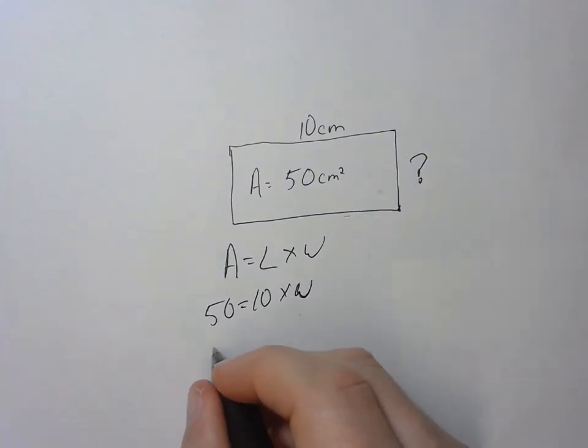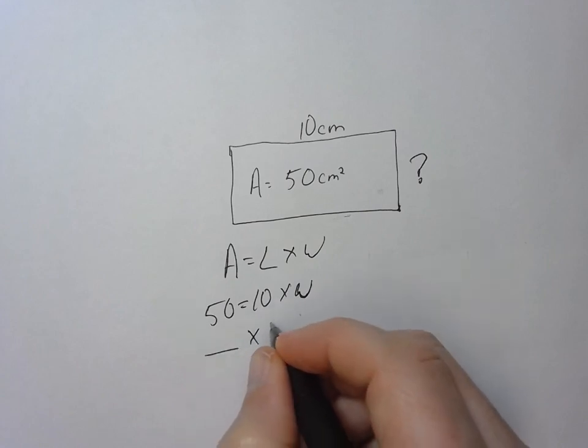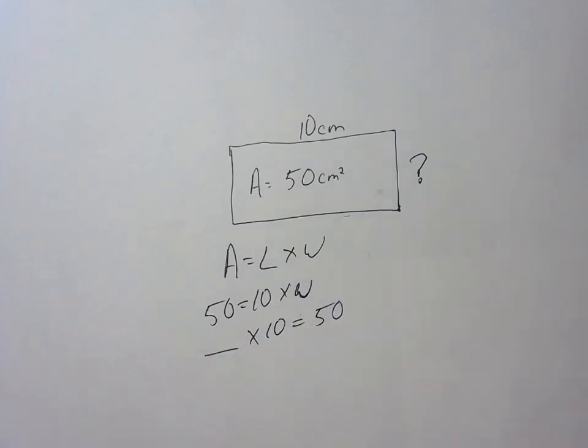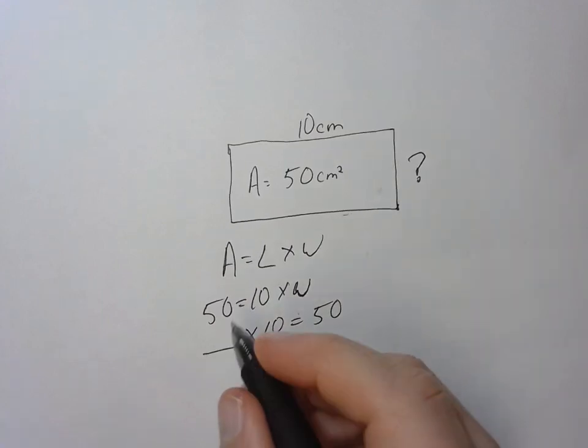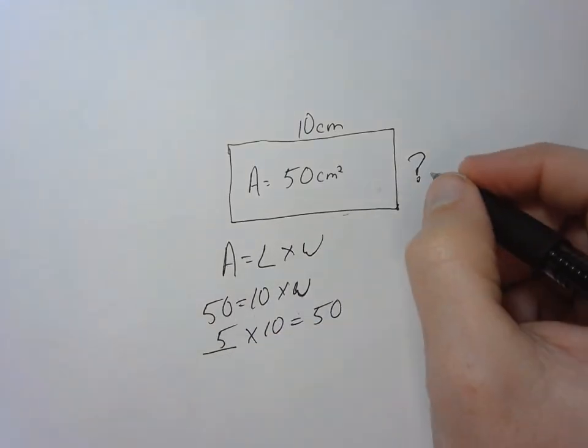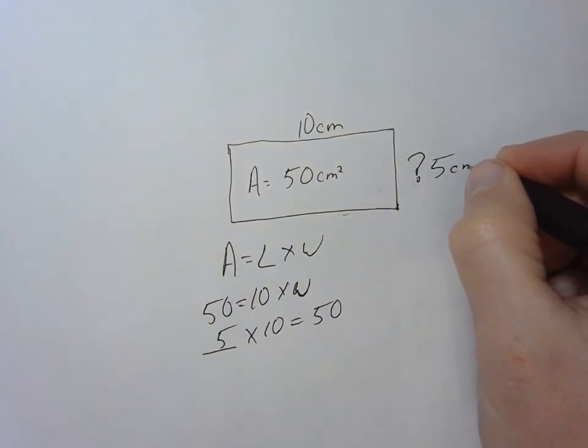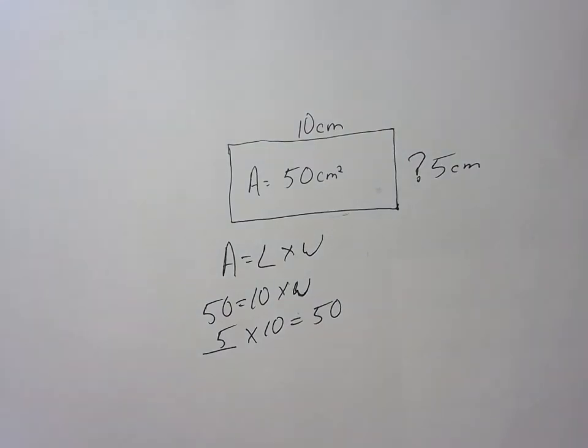So this is basically saying something times 10 equals 50. If I know my multiplication facts, it's super simple. 5 times 10 is going to equal 50, so my missing side is 5. I can also switch this around.